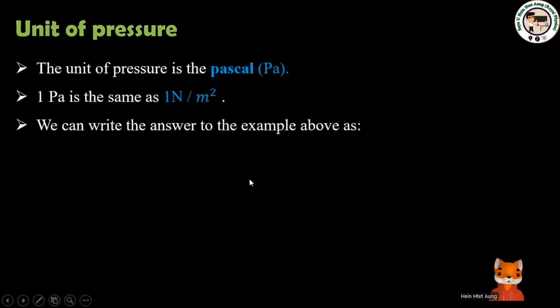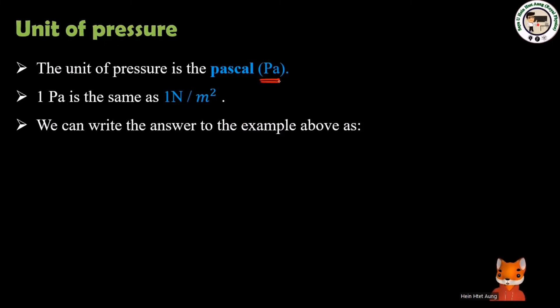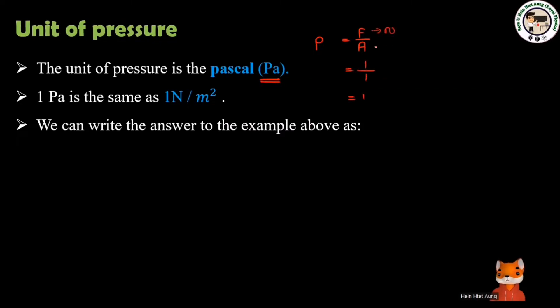If the pressure is a unit of newton per meter squared, there is an SI system — the international science system. The pressure unit in the international system is the pascal. One pascal equals one newton per meter squared. B equals F by A: force is one newton, area is one meter squared, giving one pascal.